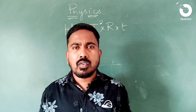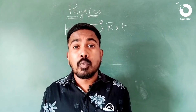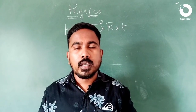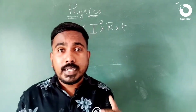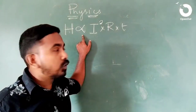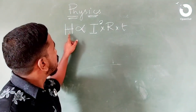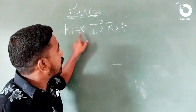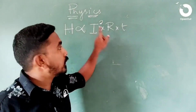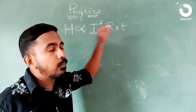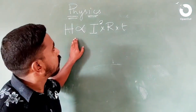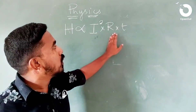In the 2-3 chapters, we will talk about the important topics. We are going to go to Joule's Law. Joule's Law is very important for the exam. H is directly proportional to I²RT. The heat generated in a current-carrying conductor is directly proportional to the product of the square of the current, the resistance of the conductor, and the time of flow of current.